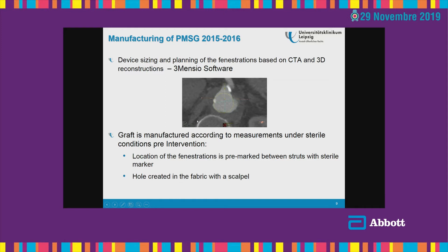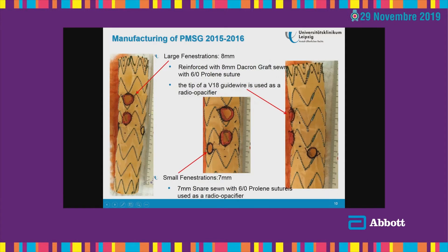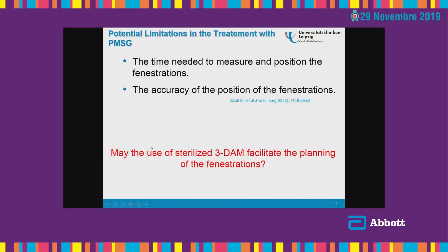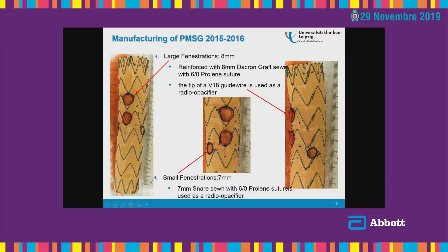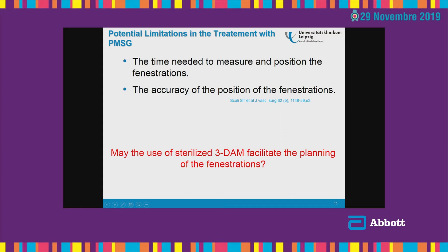We started this procedure in 2015. In the first two years, we had difficulties measuring the devices and planning the procedures, because we had the 3D measurement software available, but the accuracy was not always perfect. Here is the first graft — you can see on the big stent graft the points I placed to mark the fenestration. It took almost half an hour to place the fenestration, and then we sewed our markers and sewed up the grafts. But it took a long time, and we were thinking: is there another method to improve this planning?